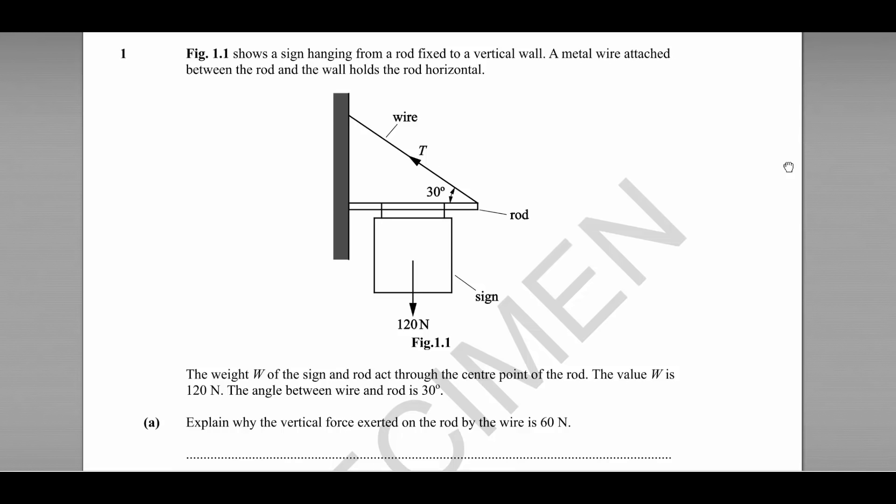Question number one begins with a diagram of a sign hanging from a rod fixed to a vertical wall. Those of you who've done enough practice questions will immediately identify this as probably being a moments question. It tells us that the weight of the rod is 120 newtons and it's acting directly through the centre point of the rod and that there's an angle between the wire and the rod of 30 degrees.